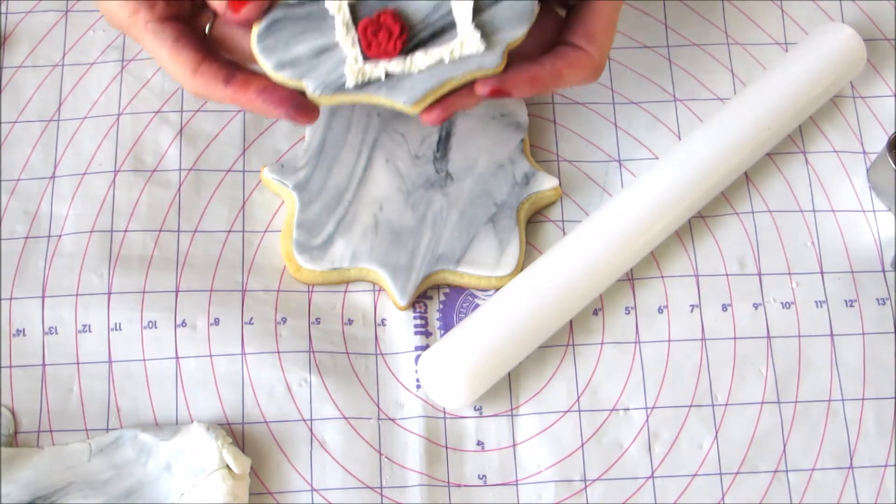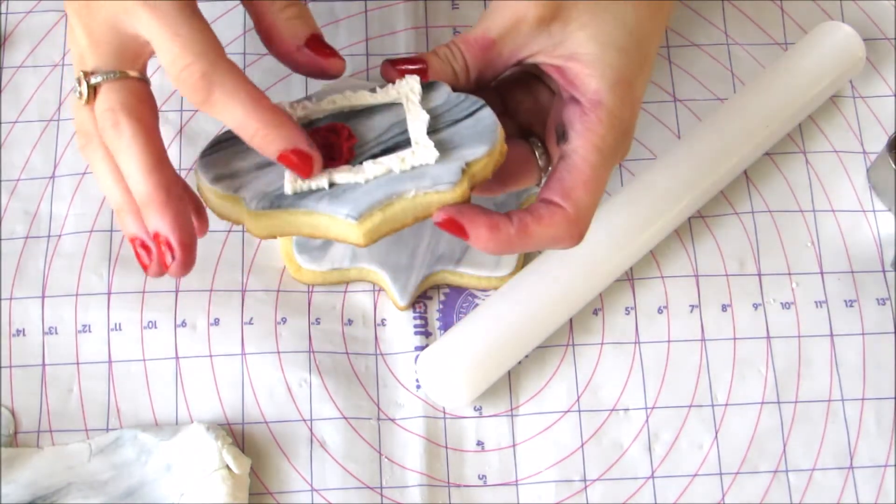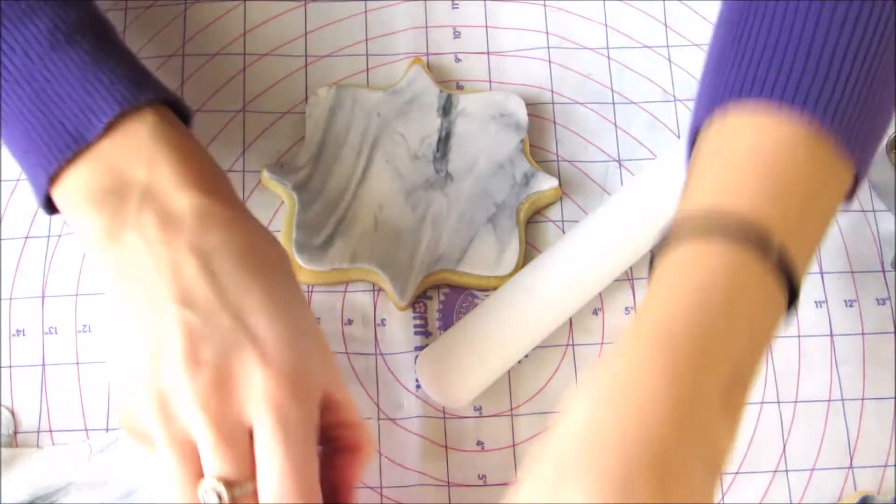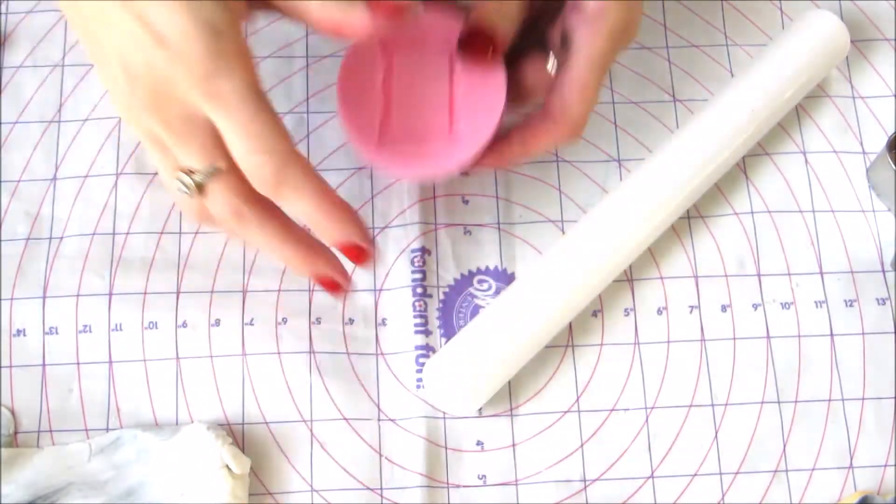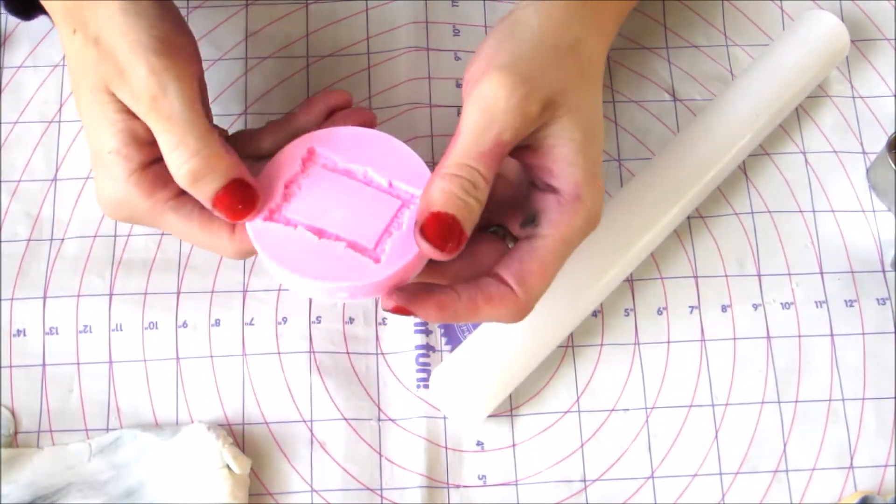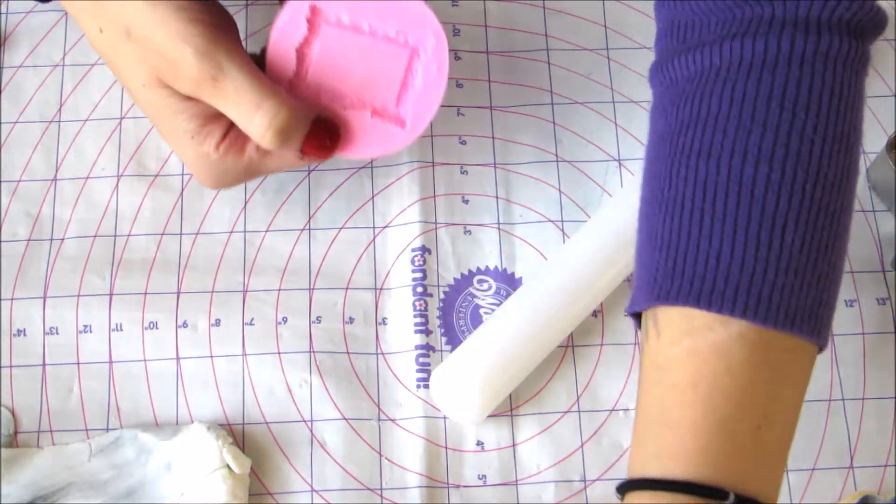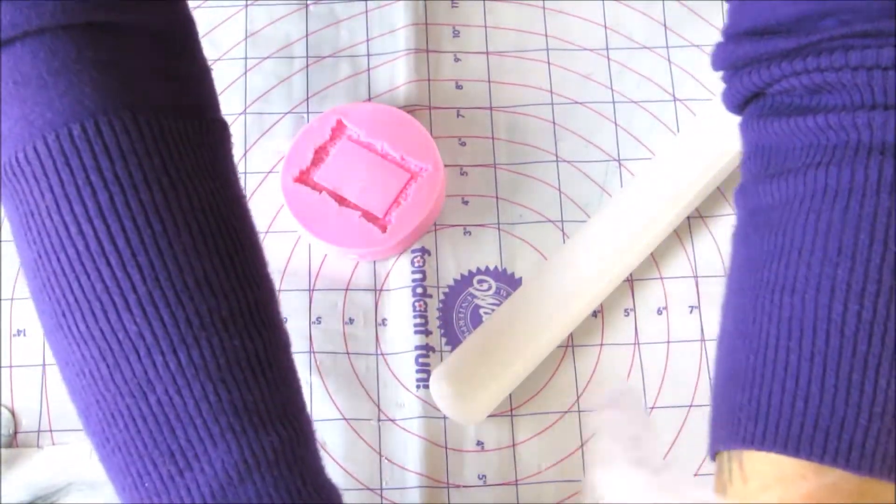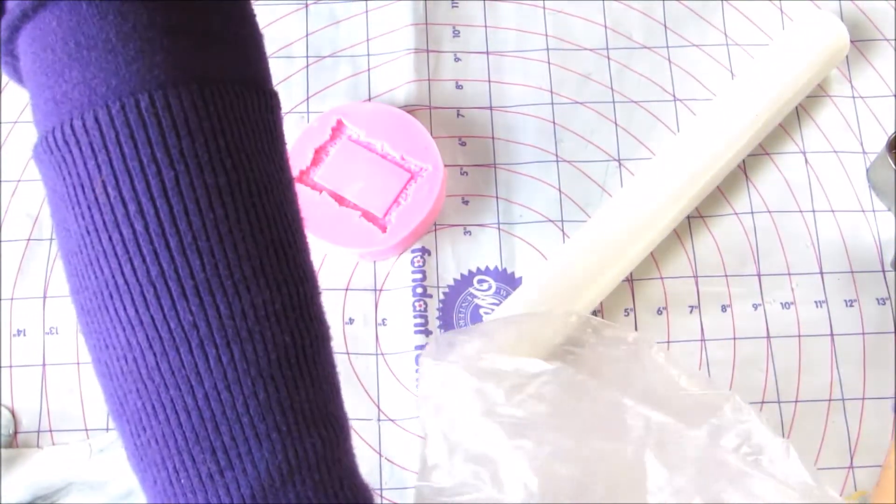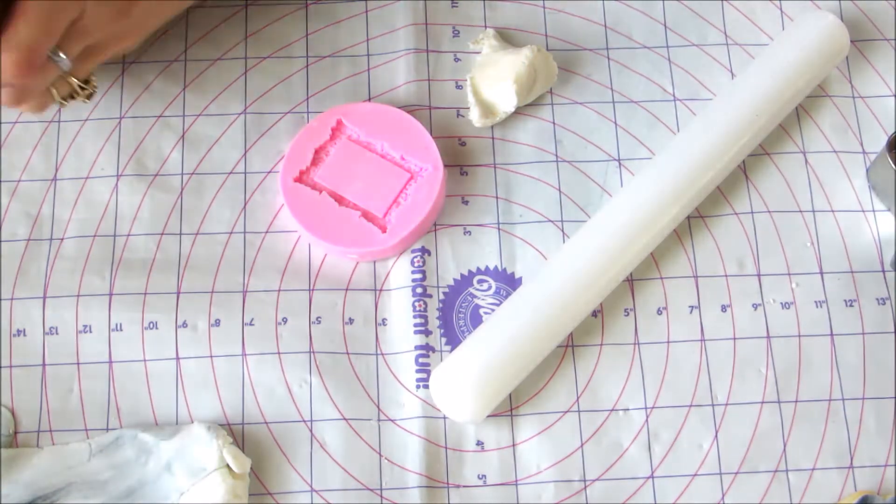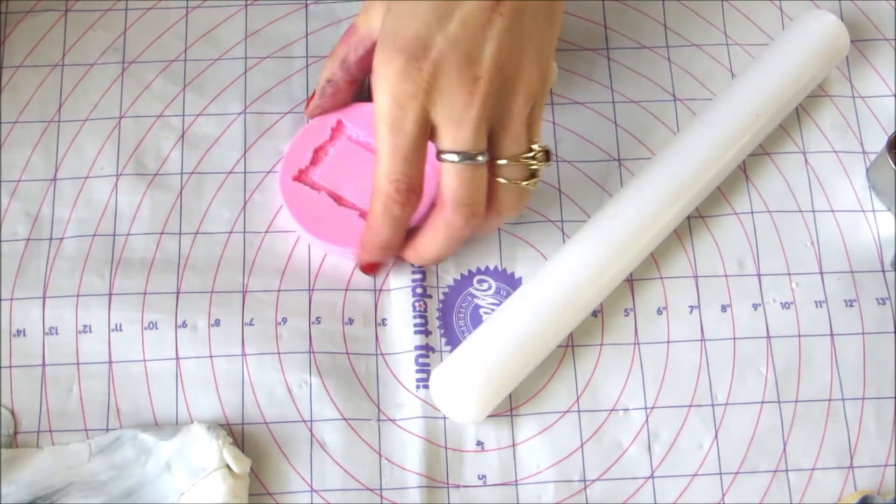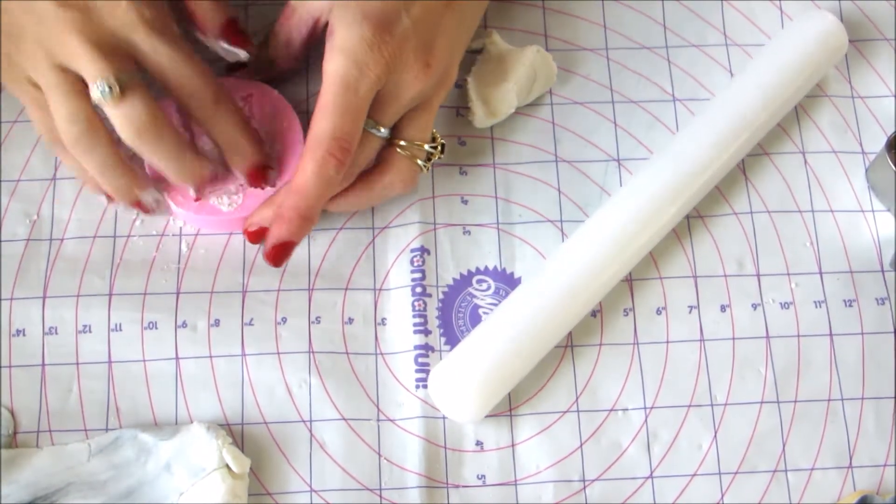If you want to create the look I have here on the cookie with the frame and the flower, you just take a mold. I'm using a small frame mold and I'm going to use gum paste for this. You want to put a little bit of cornstarch inside the mold so that it doesn't stick.